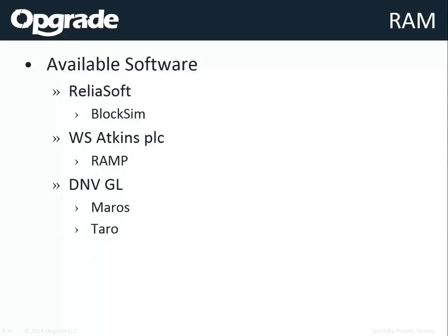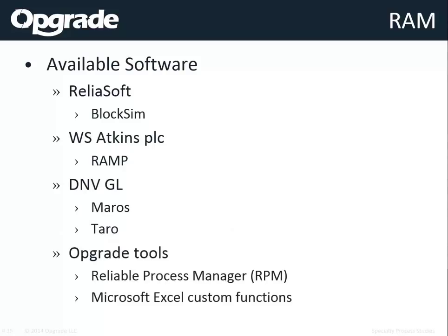DNV has a couple of tools — Maros and Taro — and if you're looking to spend $100,000–$200,000 on software, those are the ones to go with. They're great and widely used across industry. Because we wanted better capability than RAMP without that cost, we developed our own tool called the Reliable Process Manager, which lets us quickly build block diagrams with tanks, split flows, and we can supplement it with custom Microsoft Excel functions for quick answers to difficult problems.